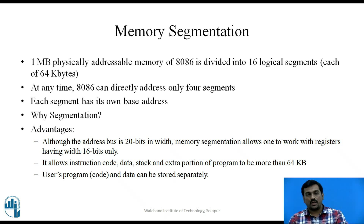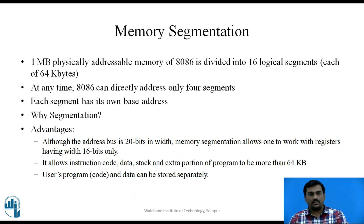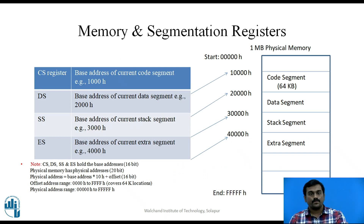Why segmentation? In order to have faster execution of instructions we need memory segmentation. The advantages are: memory segmentation allows one to work with registers having a width of only 16 bits, even though the address bus is 20 bits wide. It allows the instruction code, data, stack, and extra portions of a program to be more than 64 KB — because there are 16 such segments. Additionally, the user's program code and data can be stored separately. At any time there are 4 active segments: Code Segment, Data Segment, Stack Segment, and Extra Segment.